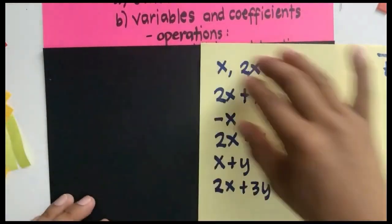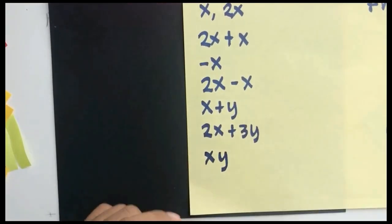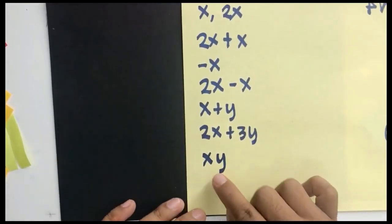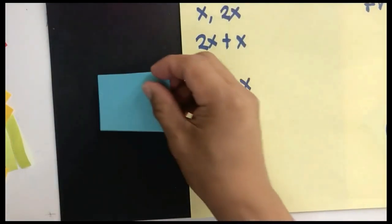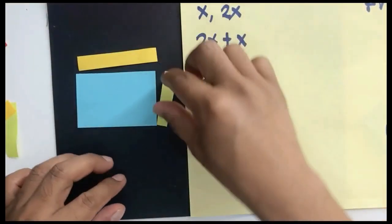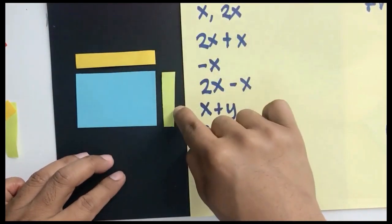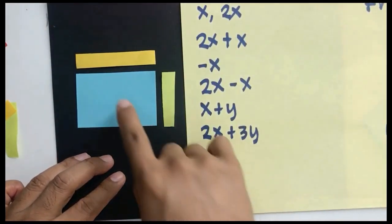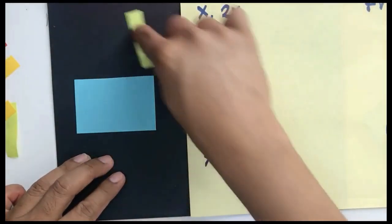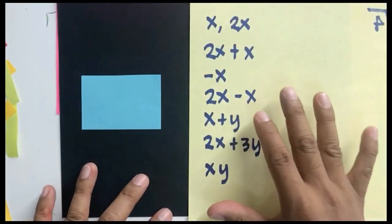We can also multiply variables. x times y is considered a polynomial. Visually, xy is a rectangle with a length of x units and a width of y units — so x times y equals xy. Visually, it is this rectangle with a length of x and a width of y. So these are all polynomials.